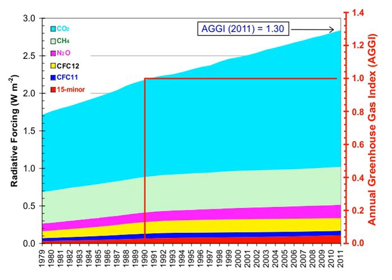Human activities since the beginning of the Industrial Revolution around 1750 have produced a 45% increase in the atmospheric concentration of carbon dioxide, from 280 ppm in 1750 to 406 ppm in early 2017. This increase has occurred despite the uptake of more than half of the emissions by various natural sinks involved in the carbon cycle. The vast majority of anthropogenic carbon dioxide emissions come from combustion of fossil fuels — principally coal, oil, and natural gas — with additional contributions from deforestation, changes in land use, soil erosion, and agriculture.